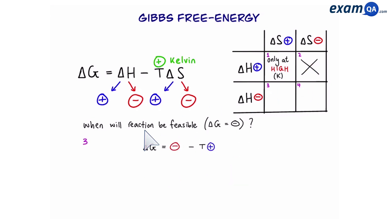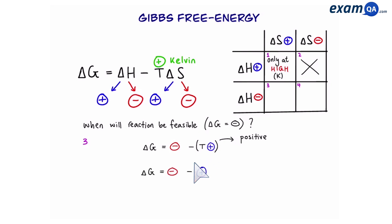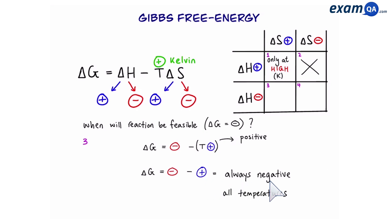Scenario three: negative delta H and positive delta S. The T delta S term will always be a positive number, so we have a negative value take away a positive value — this will always be negative. So at all temperatures, the reaction will be feasible.